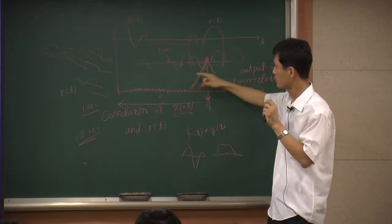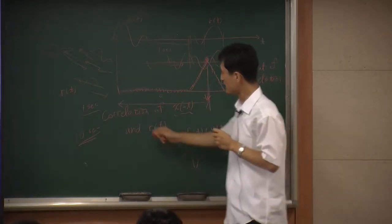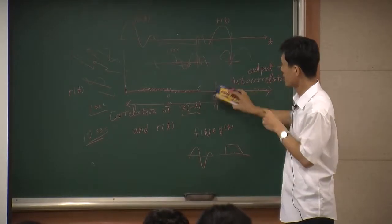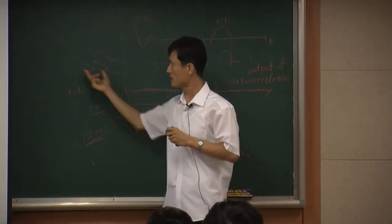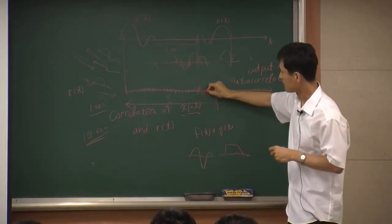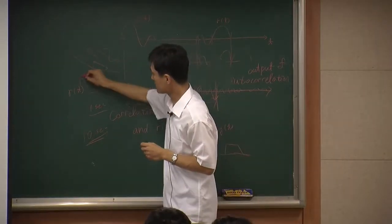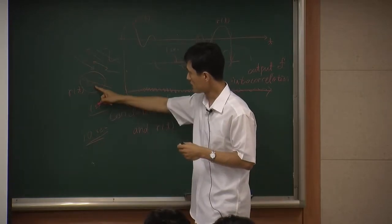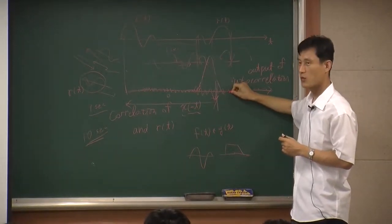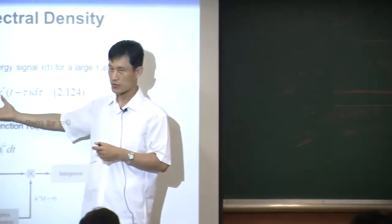When you see a peak in the autocorrelation, it means you received a matching signal — your own transmitted signal reflected back. If there's no airplane, nothing is reflected and the autocorrelation stays near zero always. Only when your own signal comes back does the received signal match your transmitted signal, so you get a peak. That's the main reason we use autocorrelation.